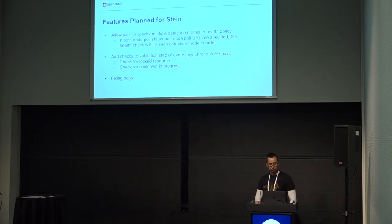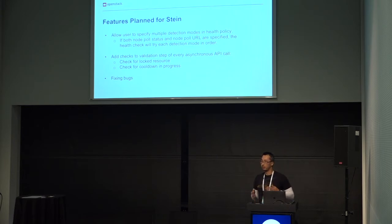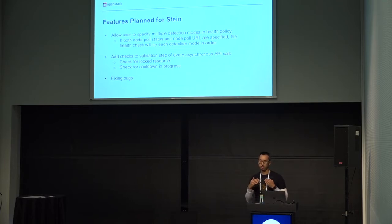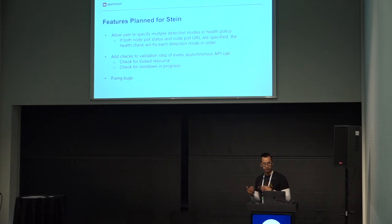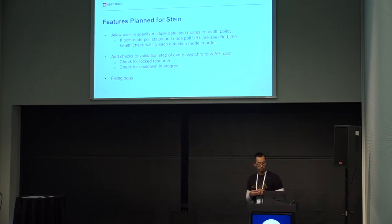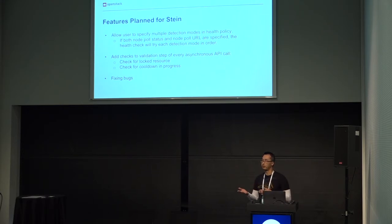Now let's talk about features planned for the Stein cycle. Along with the new detection mode added in Rocky, in Stein we really want users to be able to specify multiple detection modes in the health policy — for example, polling Nova for node status and also having the health engine poll a custom URL endpoint. We will support that by trying each detection mode in order. We're also looking to add more validation to asynchronous API calls, checking for locked resources and cooldown in progress at API ingress to improve stability.